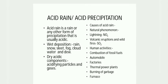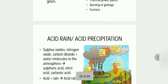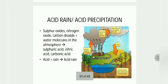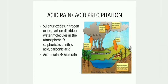Acid rain is rain or any other form of precipitation that is usually acidic. Causes of acid rain are lightning, wildfires, automobiles, and burning of fossil fuels. Sulfuric acid, nitric acid, and carbonic acid combine with rain and fall down as acid rain.